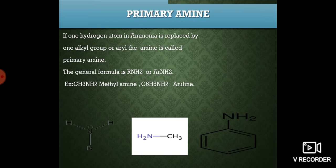In secondary amines, two hydrogen atoms in ammonia are replaced by two alkyl or aryl groups. The general formula is R2NH or Ar-NH-R. In tertiary amines, all three hydrogen atoms are replaced by three alkyl groups. The general formula for tertiary amine is R3N.